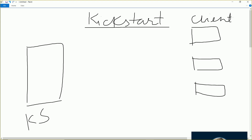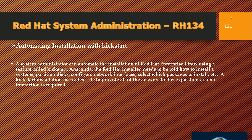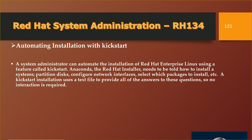A system administrator can automate the installation of Red Hat Enterprise Linux using a feature called kickstart. The Red Hat installer, Anaconda, needs to be told how to install a system: partition disk, configure network interfaces, select which packages to install, etc. A kickstart installation uses a text file to provide all the answers to these questions, so no interaction is required.